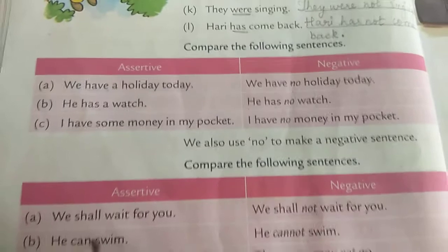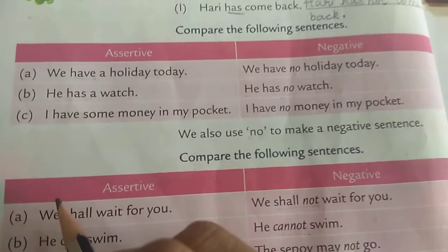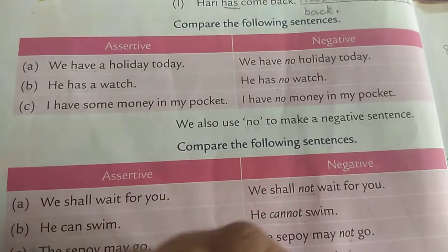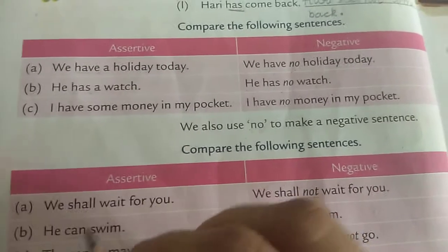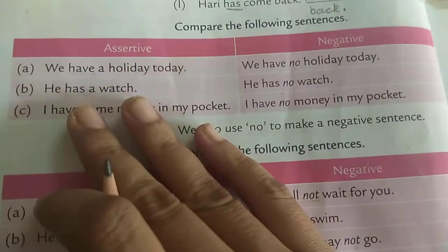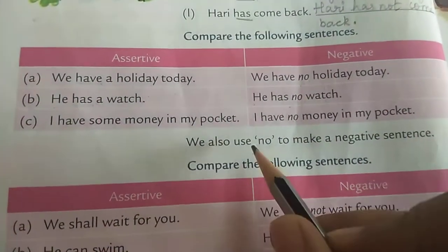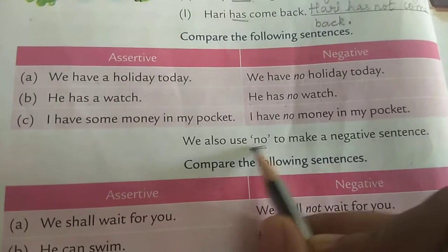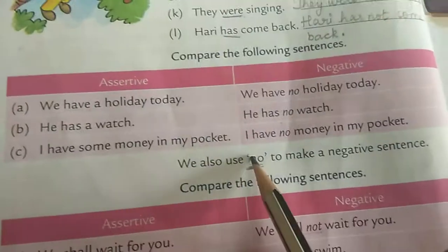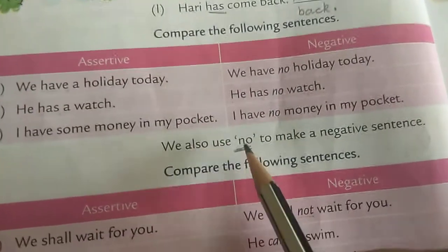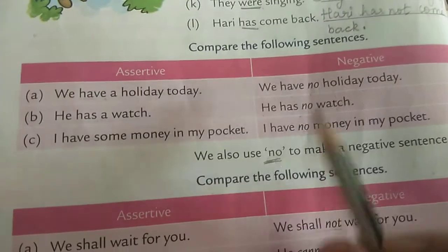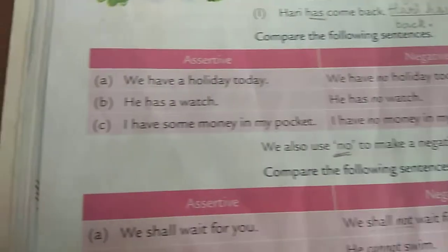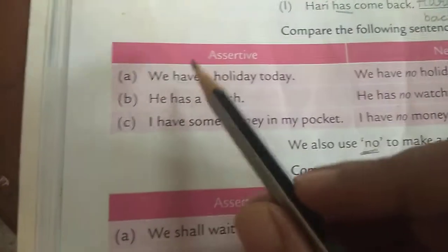In the previous exercise, we only added 'not' to the sentence. Here we are going to learn when to add 'no' in the sentence to make it negative.